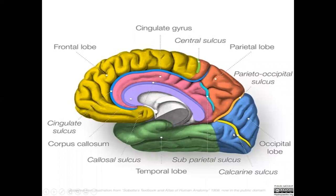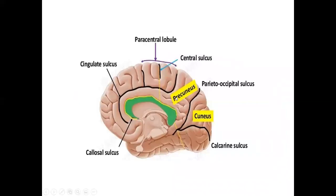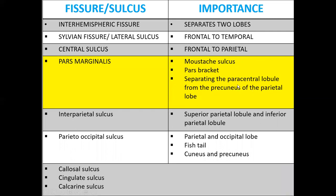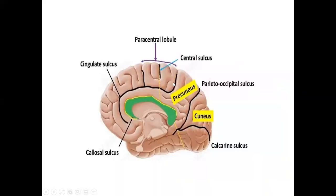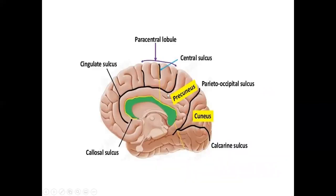The lingual gyrus is here, and this is the calcarine sulcus. Another important landmark is the pars marginalis — also known as the marginal sulcus — which separates the paracentral lobe from the precuneus of the parietal lobe. The cingulate sulcus continues toward the margin of the brain as the marginal sulcus. So: paracentral lobe, precuneus, central sulcus, precuneus, cuneus, parieto-occipital sulcus, calcarine sulcus separating cuneus from lingual gyrus.